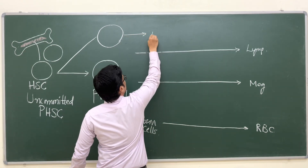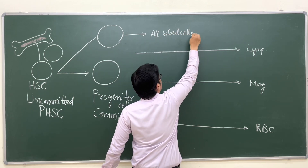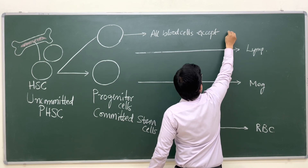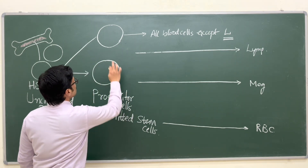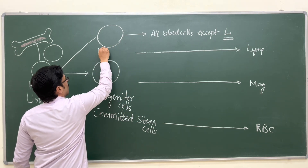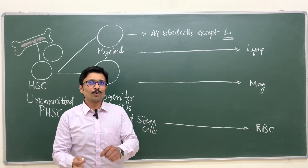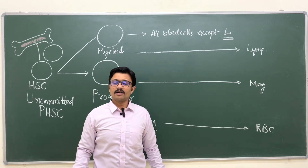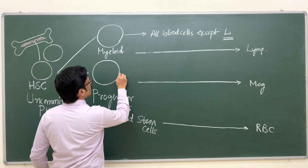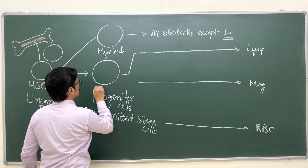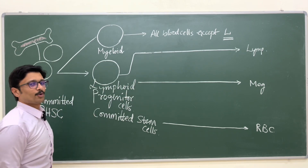The first progenitor cell gives rise to all blood cells except T lymphocytes and B lymphocytes — this is the myeloid progenitor. The second progenitor cell, which gives rise to lymphocytes, is the lymphoid progenitor.